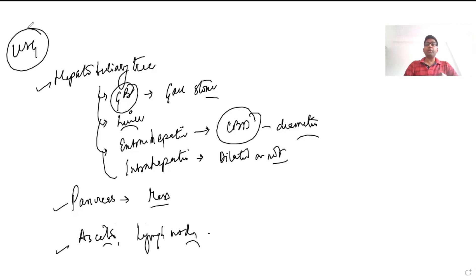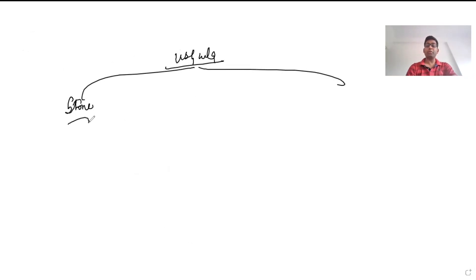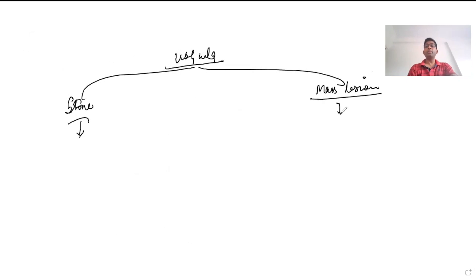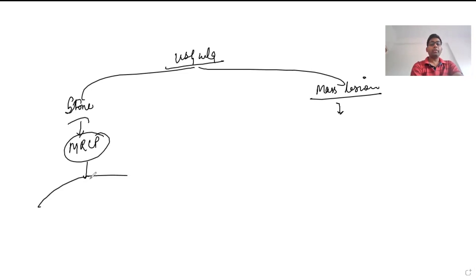Depending on the ultrasound finding, we decide what further investigation to pursue. If the ultrasound is suggestive of stone disease — for example, stones in the gallbladder or multiple calculi with stone in the bile duct — the management approach will be different from if a mass lesion is found. If the ultrasound suggests a stone in the common bile duct, we go for an MRCP, which gives better anatomical delineation of the entire hepatobiliary tree and provides information on the number, size, and exact site of the calculi.